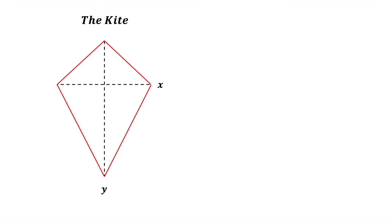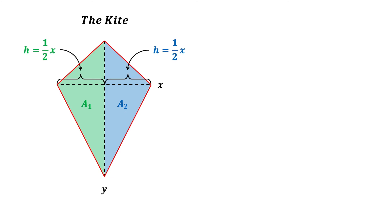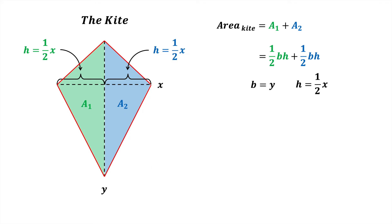The penultimate quadrilateral we will look at is the kite with lengths x and y. We can divide the kite into two identical triangles whose areas are a1 and a2. This time, the base of each triangle is y but the height of each triangle is one half of x. The area of the kite is the sum of a1 and a2. Since both these areas are triangles, the area of the kite equals half base times height of the green triangle plus half base times height of the blue triangle. For both these triangles, the base is y and the height is half x.